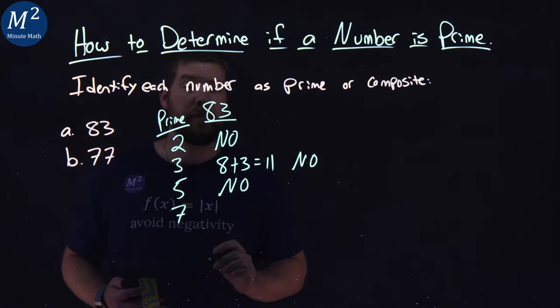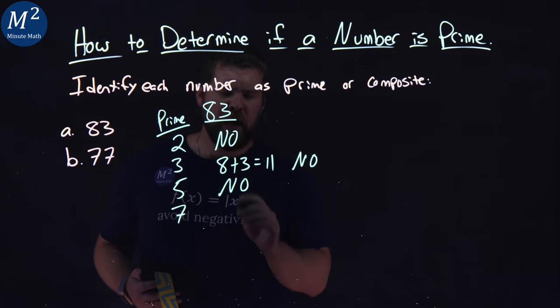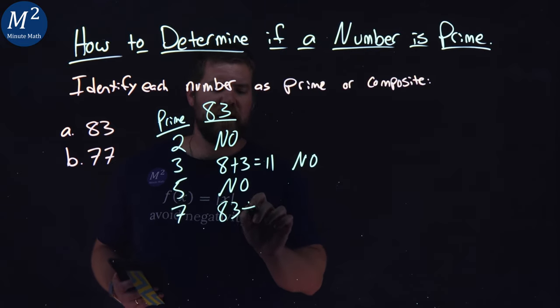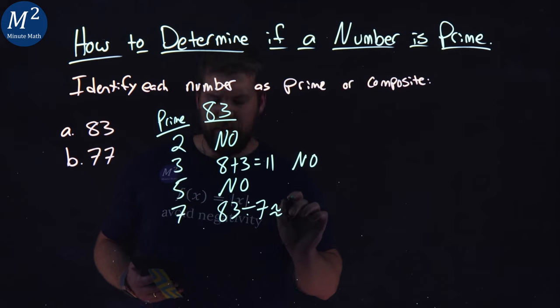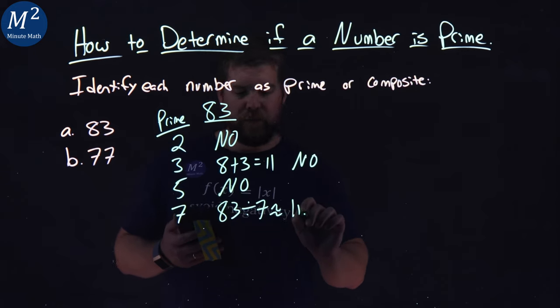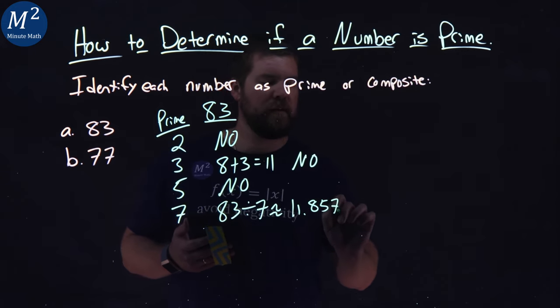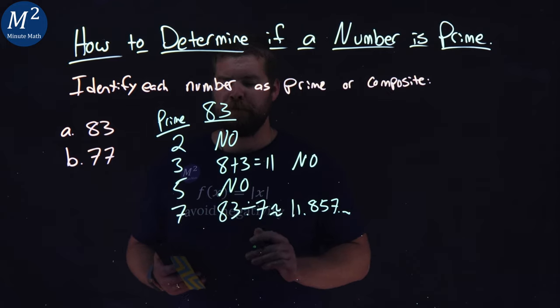Next prime number here is 7. Now there's no real tricks for 7, so we have to just test 83 divided by 7. And that comes out to be 11.857. Doesn't go in evenly, so we're good.